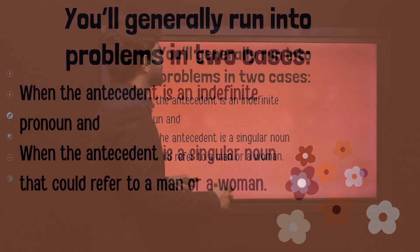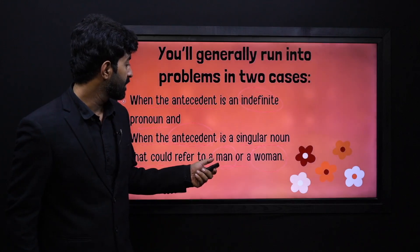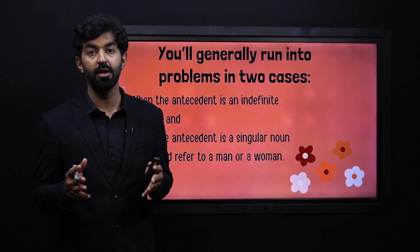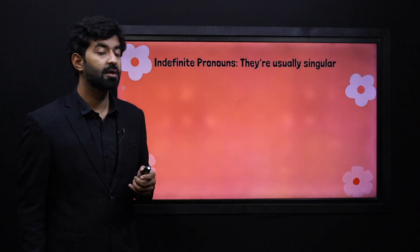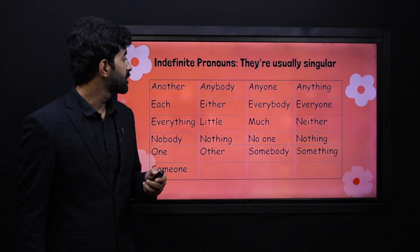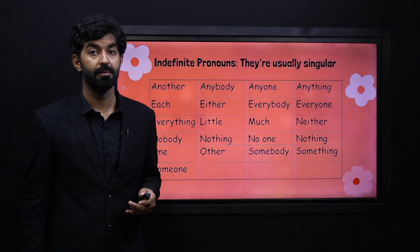Next, you will face two kinds of problems: number one is when the antecedent is an indefinite pronoun, and number two is when the antecedent is a singular noun that could refer to a man or a woman. These are two different situations in which you must be very careful. Now, let's look at indefinite pronouns. These are all the indefinite pronouns, and they are usually treated as singular — another, anybody, anyone, anything — we use our pronoun antecedent in the singular form.